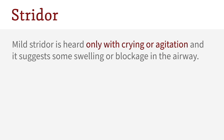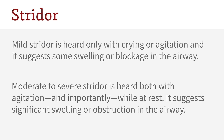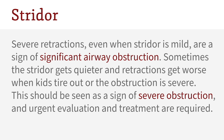Stridor can be mild, moderate, or severe. Mild stridor is heard only with crying or agitation, and it suggests some swelling or blockage in the airway. Moderate to severe stridor is heard both with agitation and, importantly, while at rest, and it suggests significant swelling or obstruction in the airway. Severe retractions, even when stridor is mild, are a sign of significant airway obstruction.